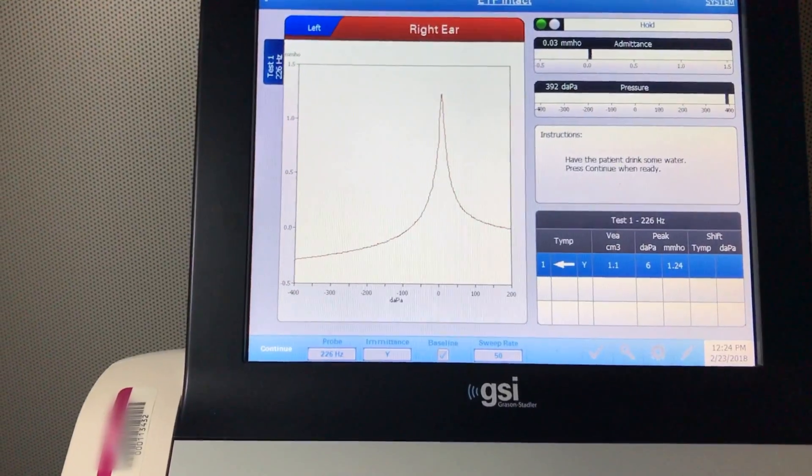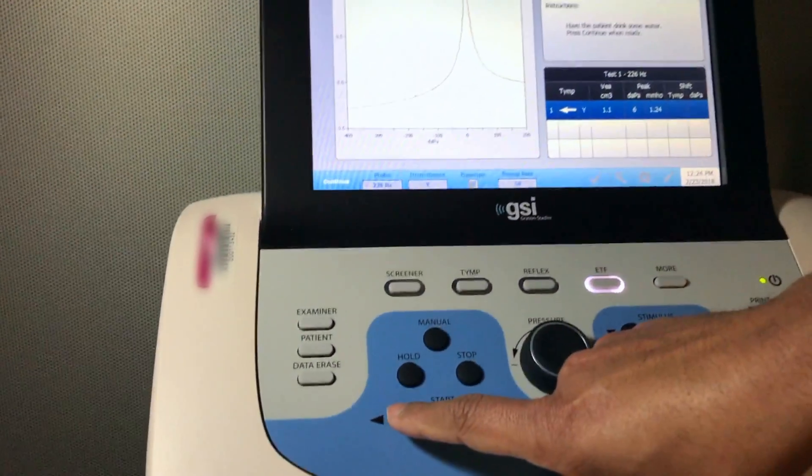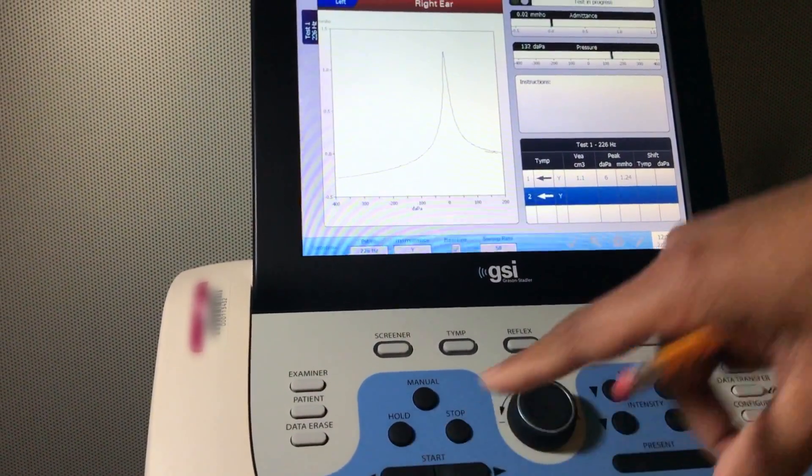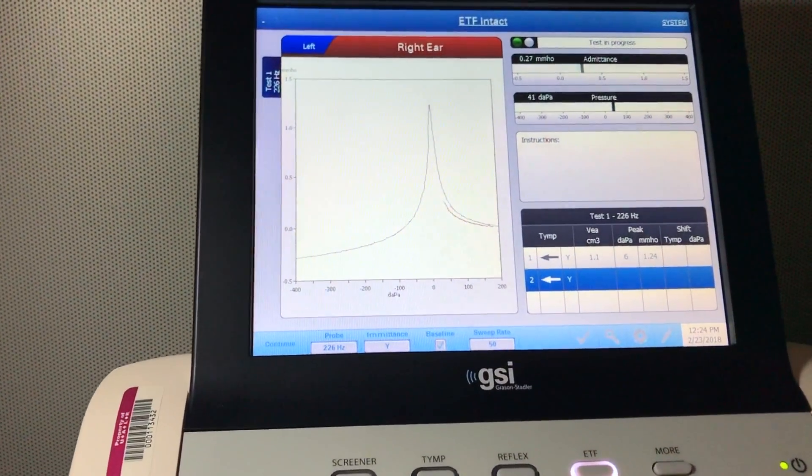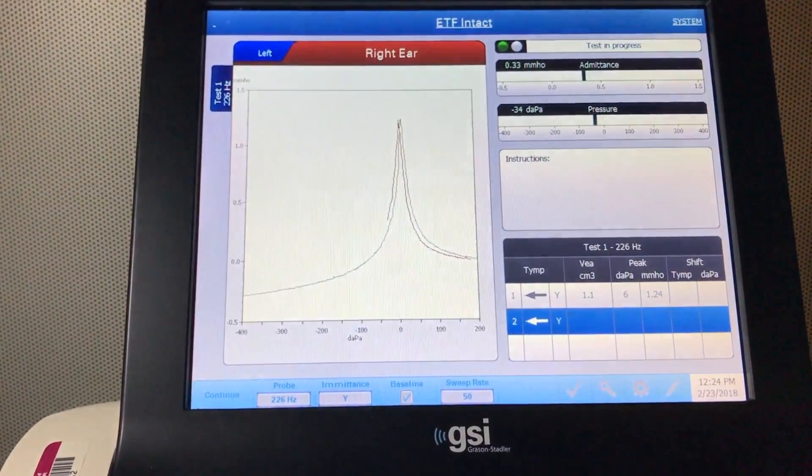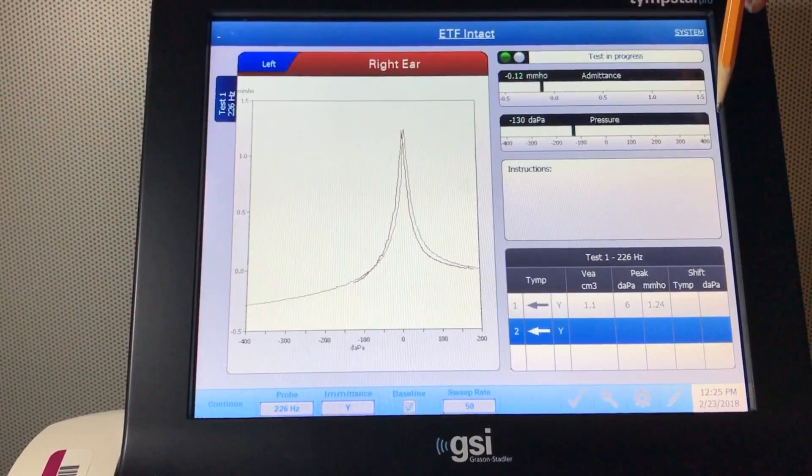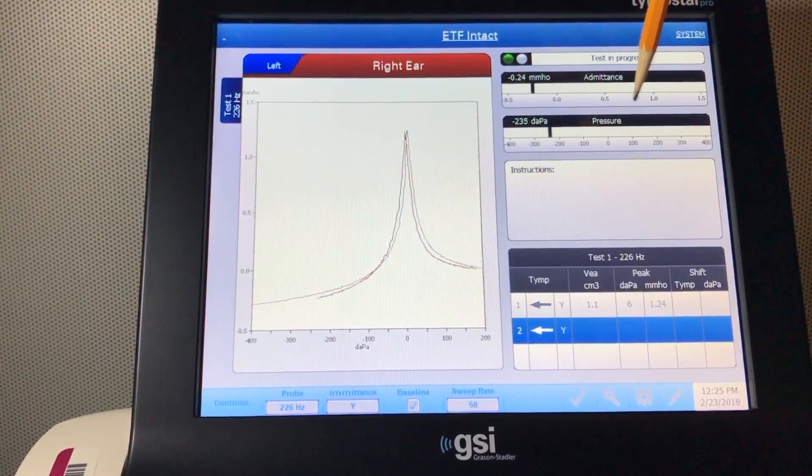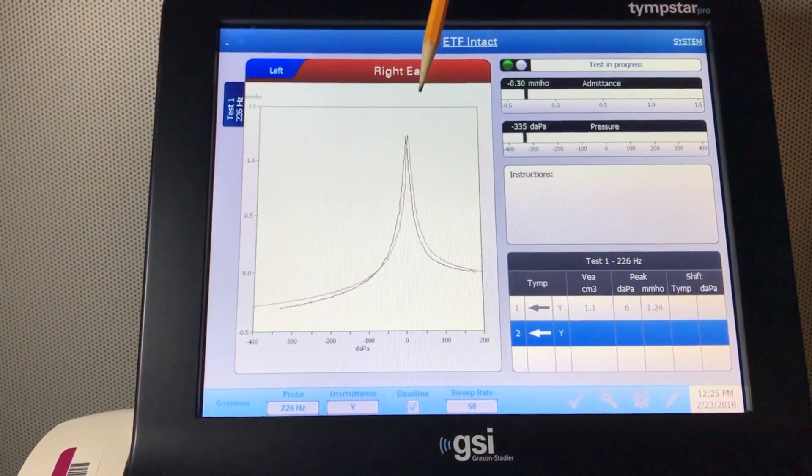Okay, next you're going to get a second temp. Just press start here. By creating a positive pressure in the ear canal and having the patient drink some water, it's going to create a negative middle ear pressure.